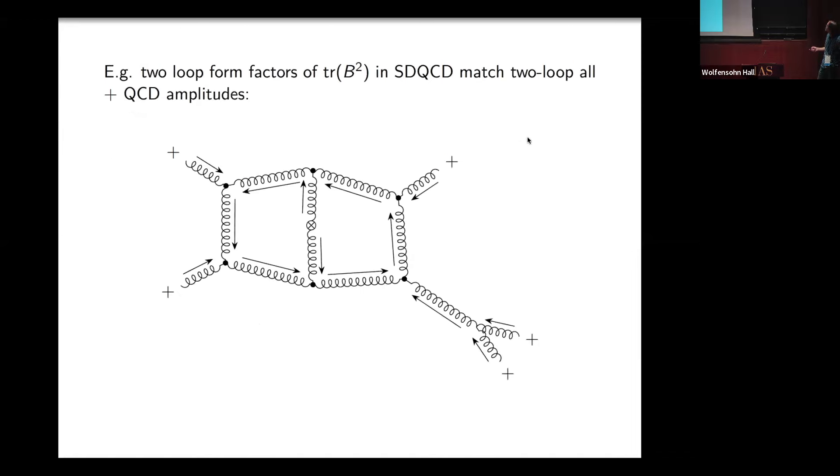These form factors know about some low loop number QCD things, which tend to have lots of external positive helicity states. At tree level, diagrams like this have two external negative helicity states. So at tree level, they give you the Parke-Taylor formula. If I want to compute the one and two-level form factors of this operator, this is a natural loop-level completion of the Parke-Taylor expression.